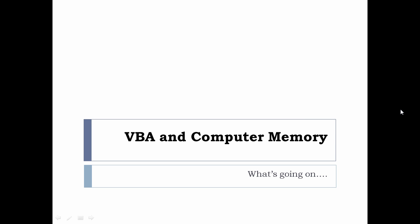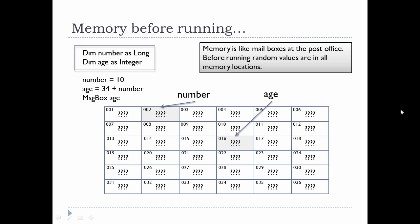This is a simple demonstration or discussion of computer's memory and how VBA works with computer memory. When you set up your variables using DIM statements, essentially what you're doing is you're naming memory locations.